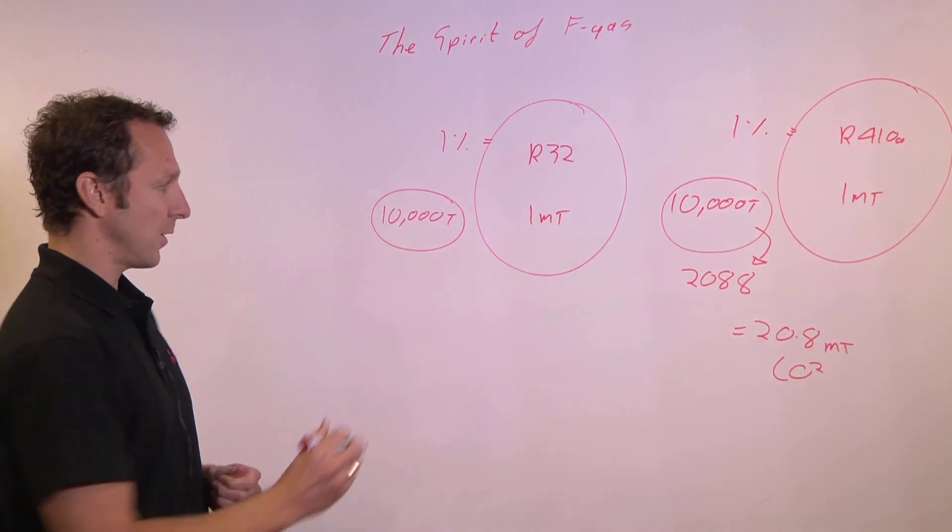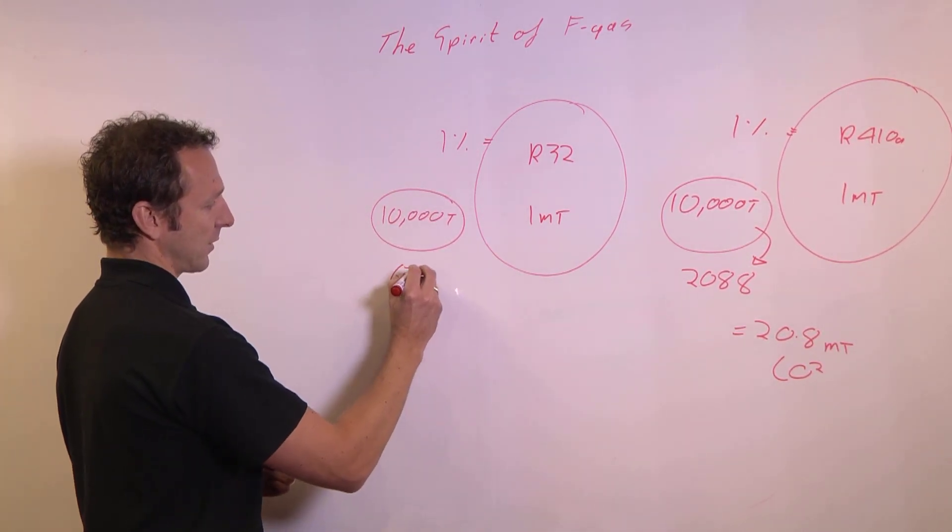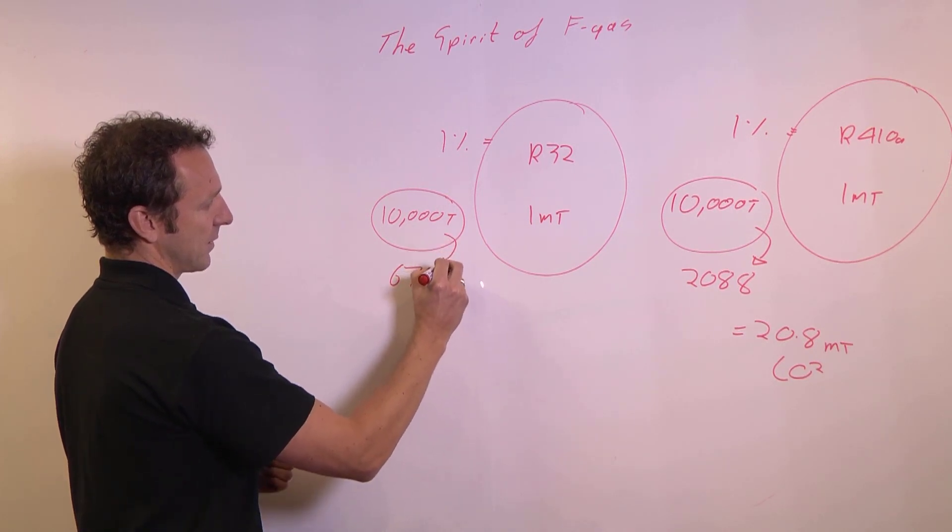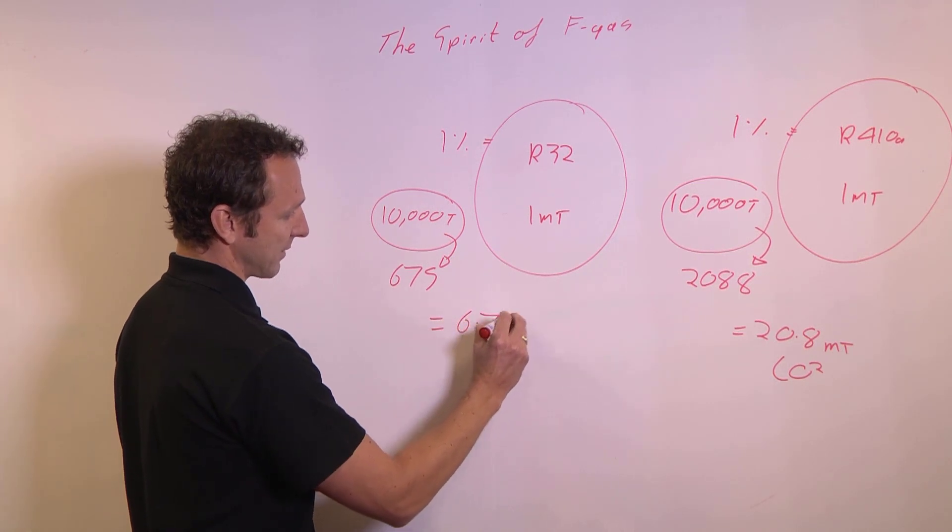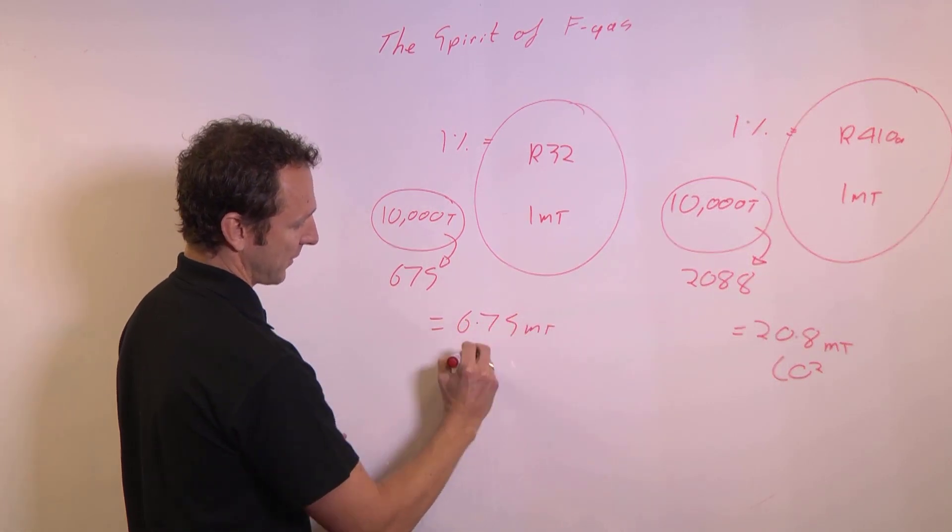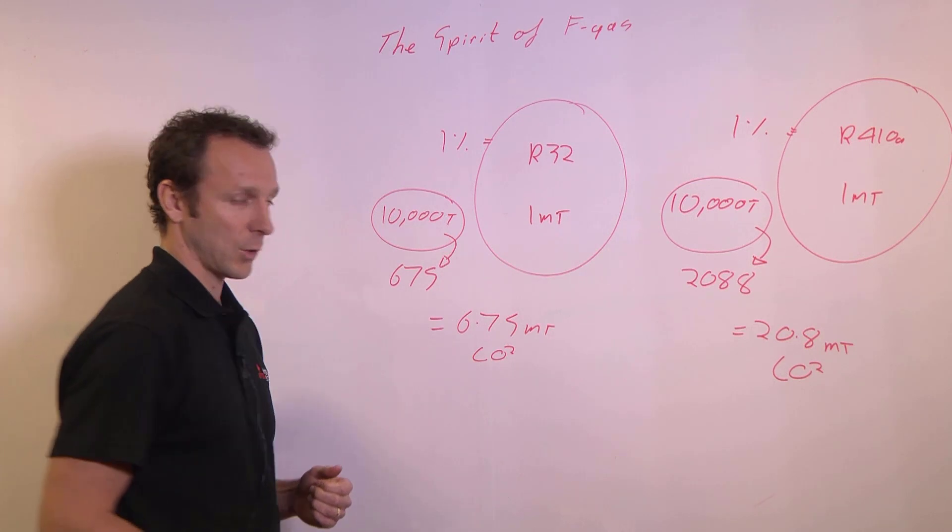However, R32 has a global warming potential of 675. By multiplying the two together, the CO2 equivalent is reduced to 6.75 million tonnes of CO2 equivalent.